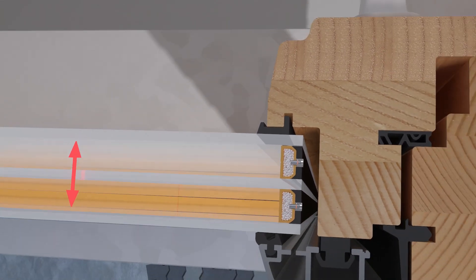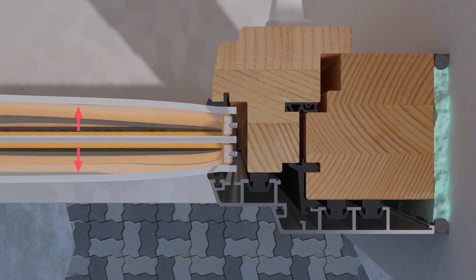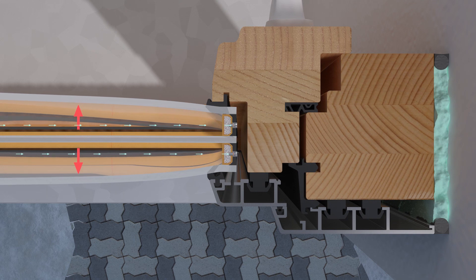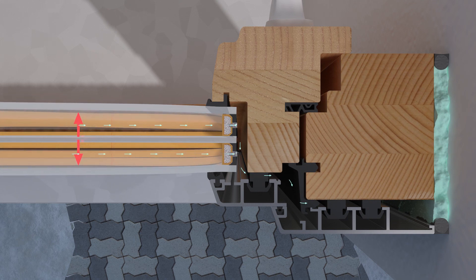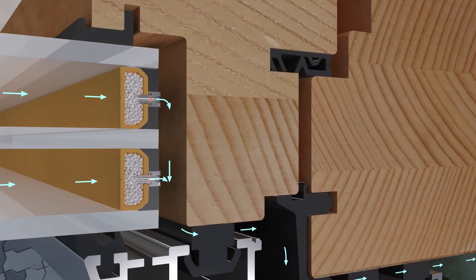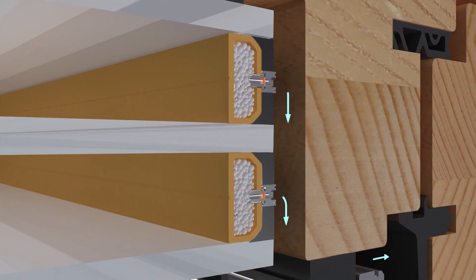If it gets warmer, the air expands and the panes bend outwards. Overpressure is created, which the Swiss Spacer air slowly balances out. The cavity between the panes contains air and not inert gas.